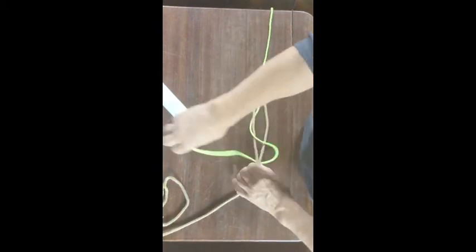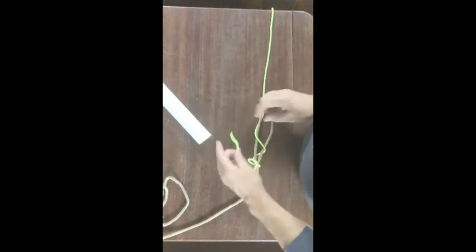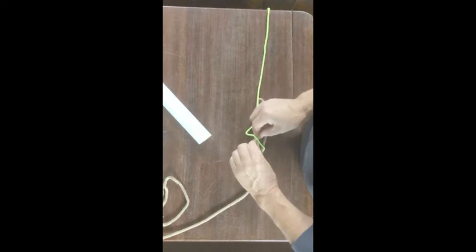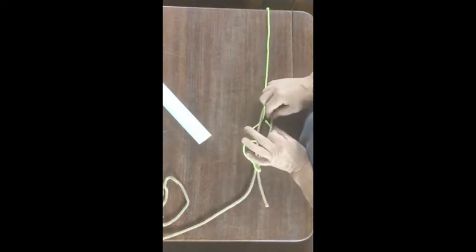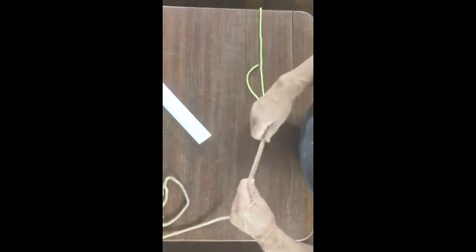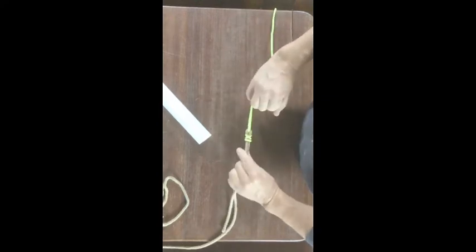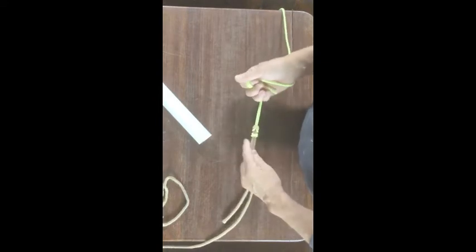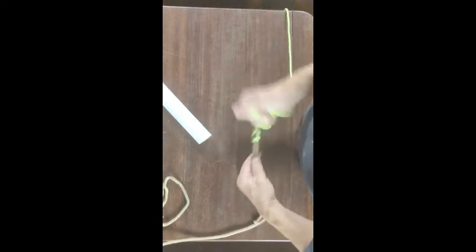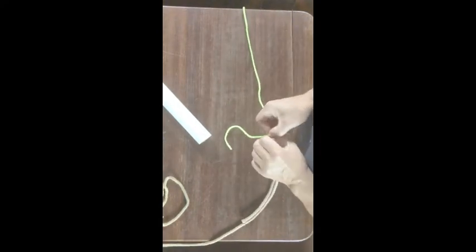Over and under, over and under again, underneath this loop, under and back up, cinch it up. There it is. It's got lots of kisses on it, easy to do.